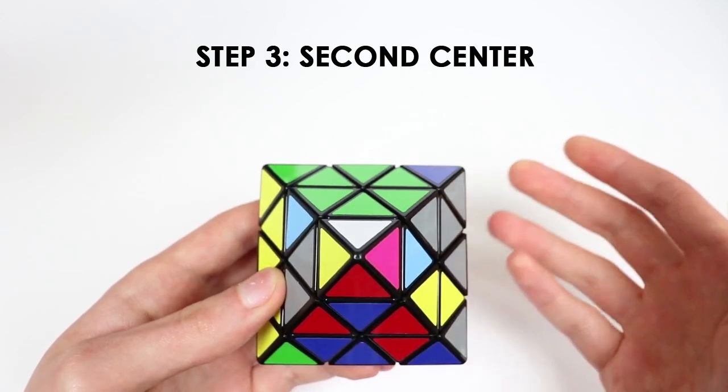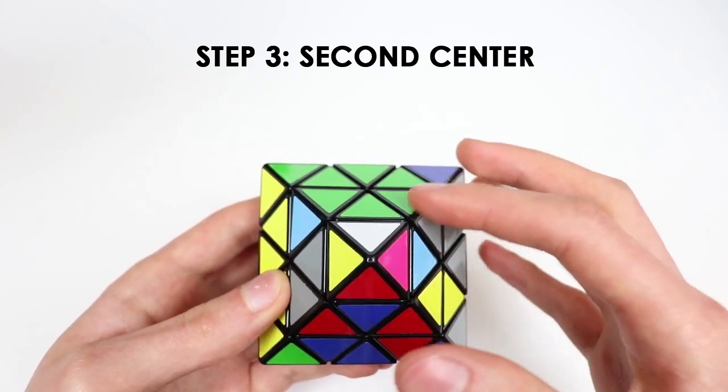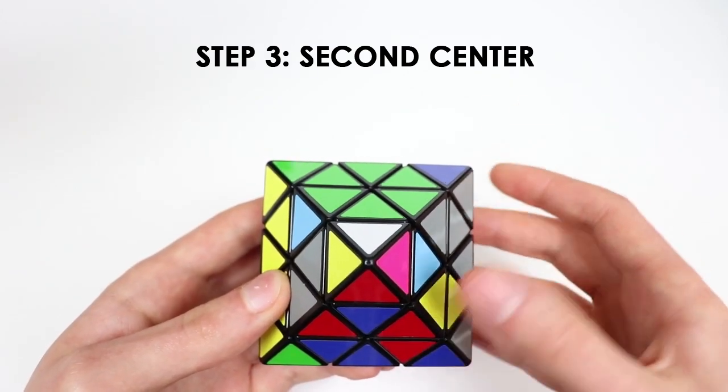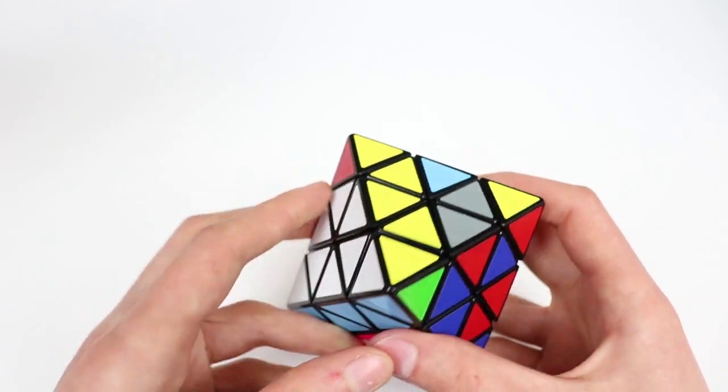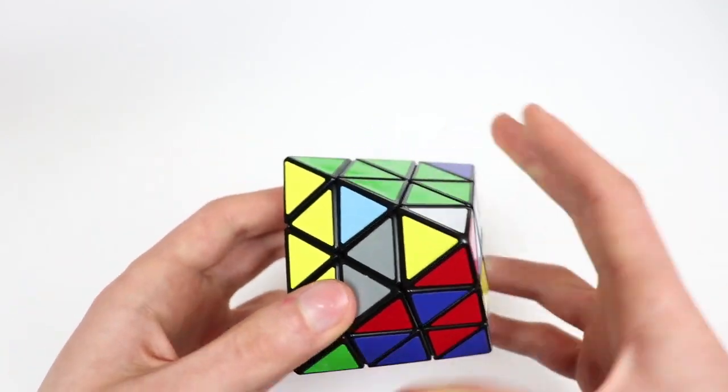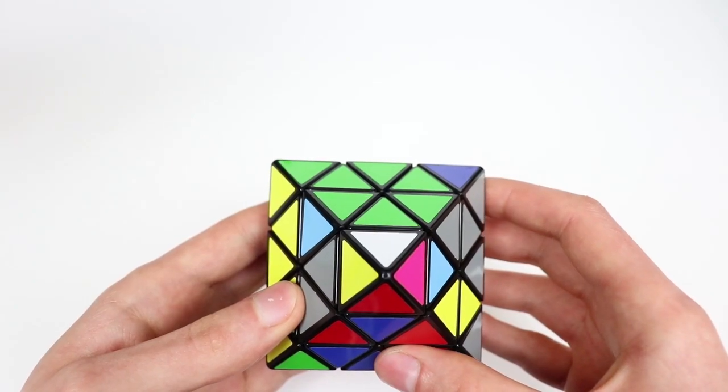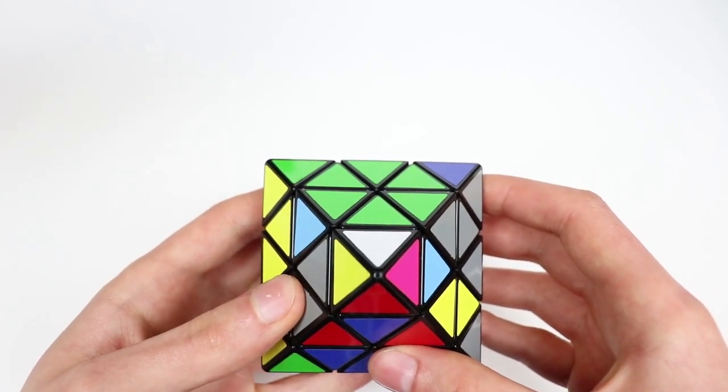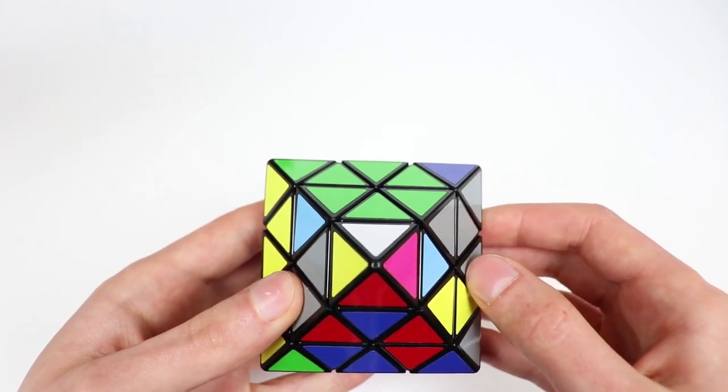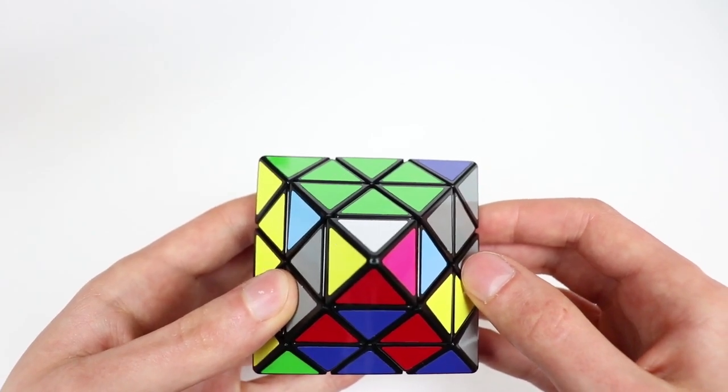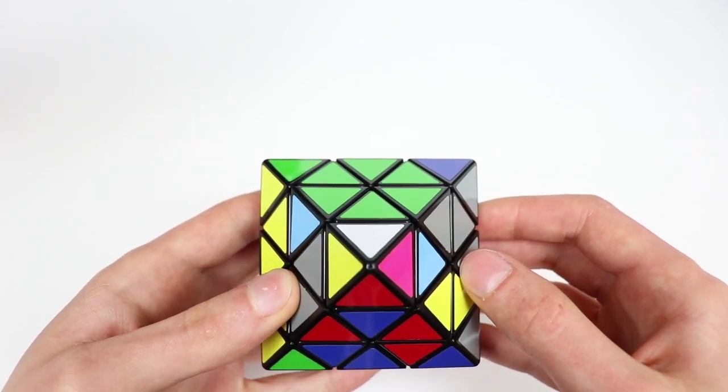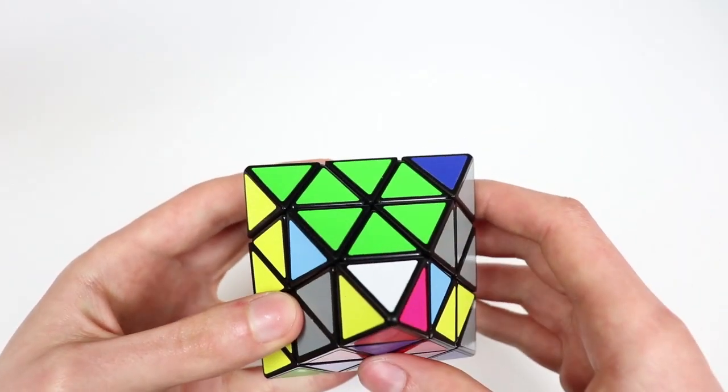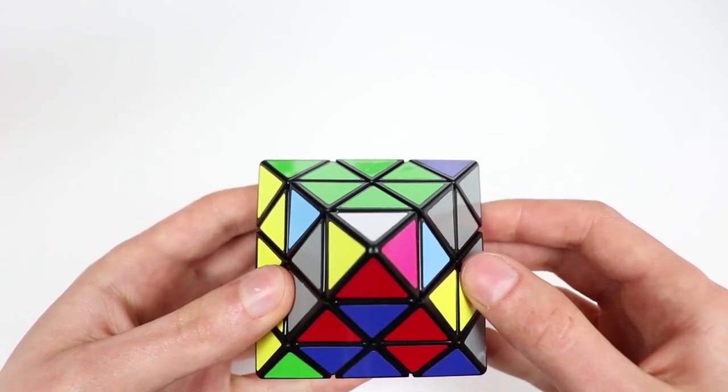The second center. It might seem a little bit silly that I'm making a separate video on just this step, but it really is needed. Despite its superficial similarity with solving the first center in the first step of the solution, it does demand different technique, and there are many things that we can take advantage of in this step that can be very crucial to a solve. So let's go over the scope of the second center in the context of the entire FTO solution.